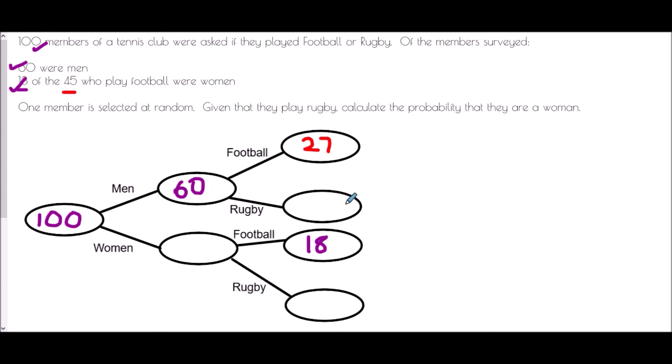How do we work out the rest of this information? Well, it all comes down to what do we already know? We know there were 100 people and 60 of them were men. So the remainder must be women—40 women. We know that there are 60 men and 27 play football. So the remainder must play rugby. So 60 take away 27 is 33. 40 women, 18 of which play football. The rest must play rugby. So 40 take away 18 is 22. And that would give us our full frequency tree.